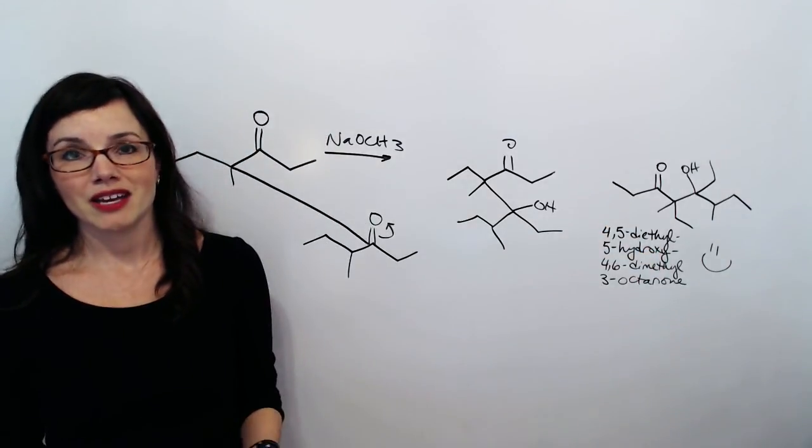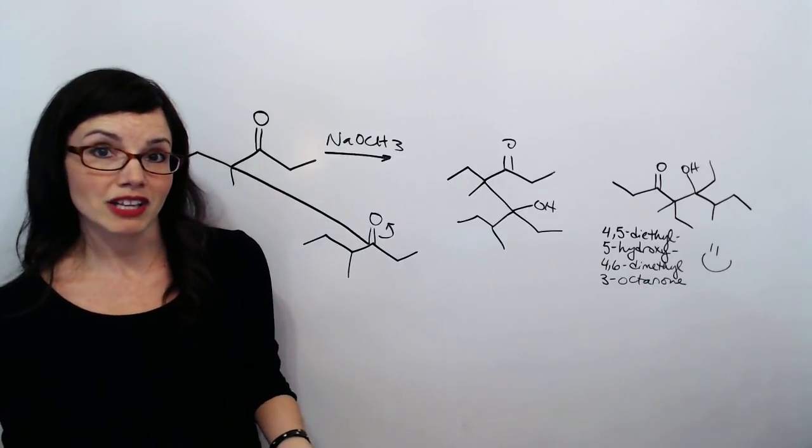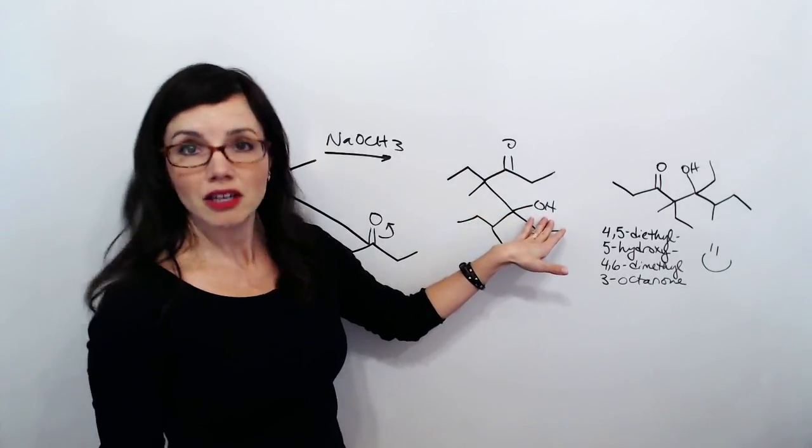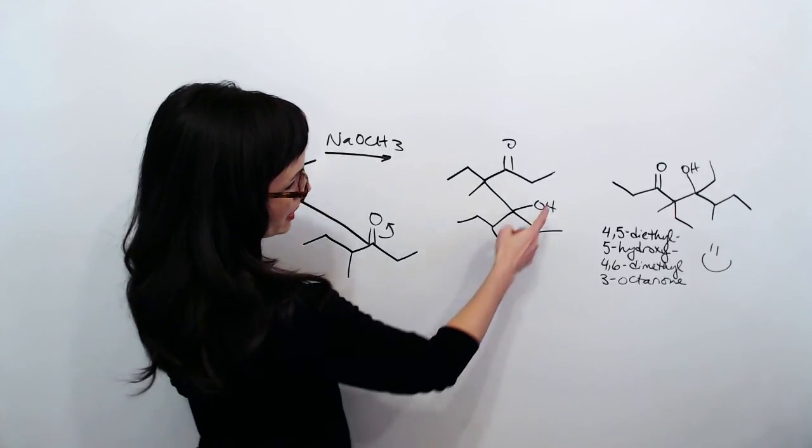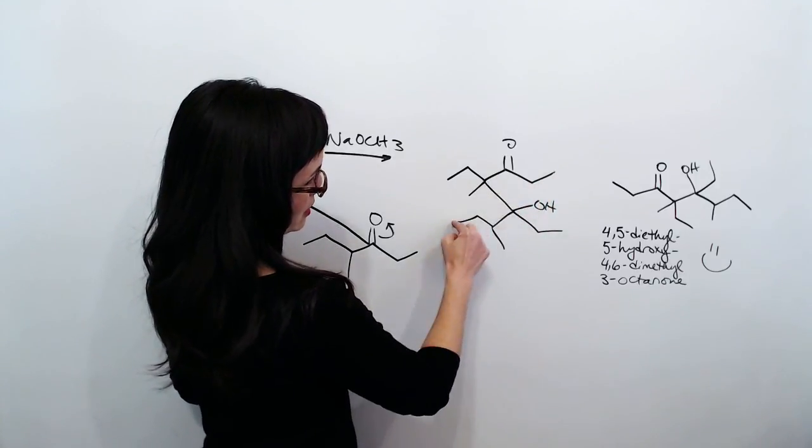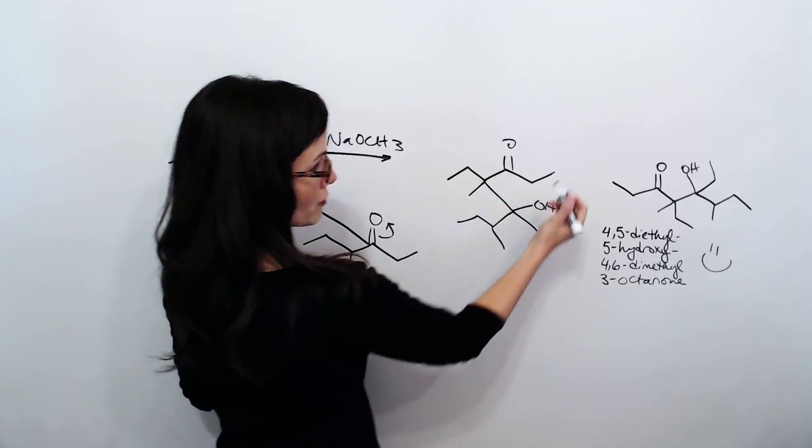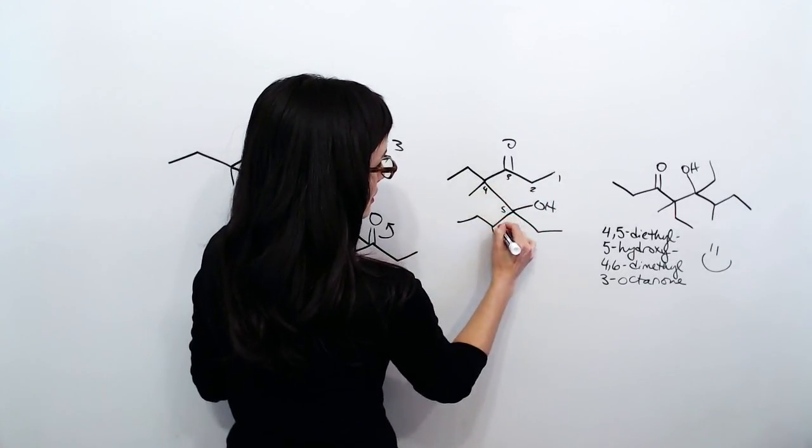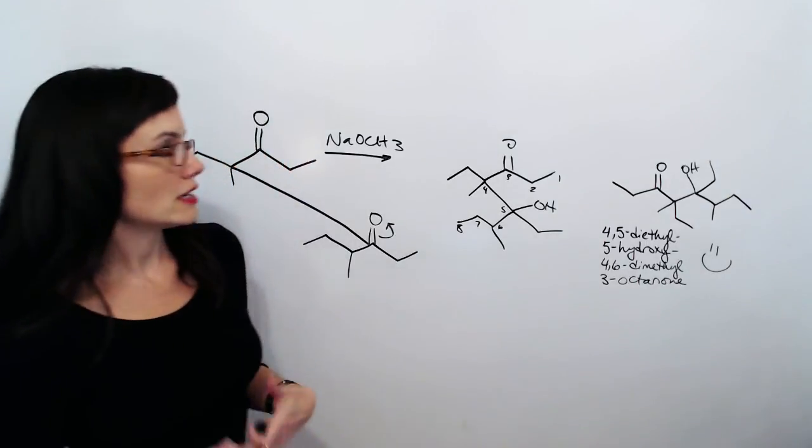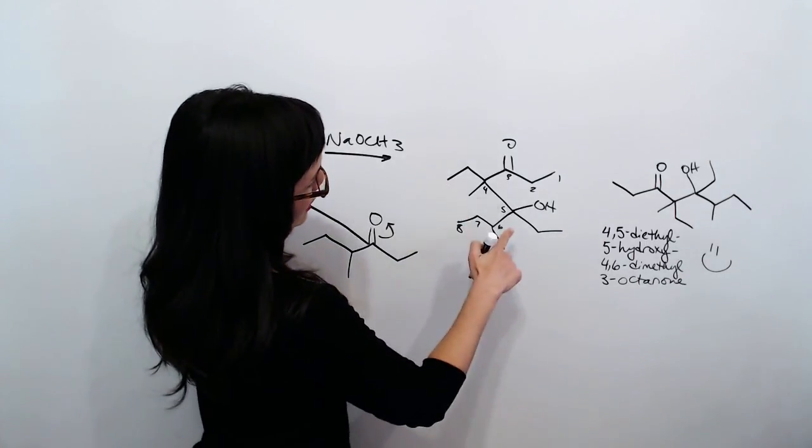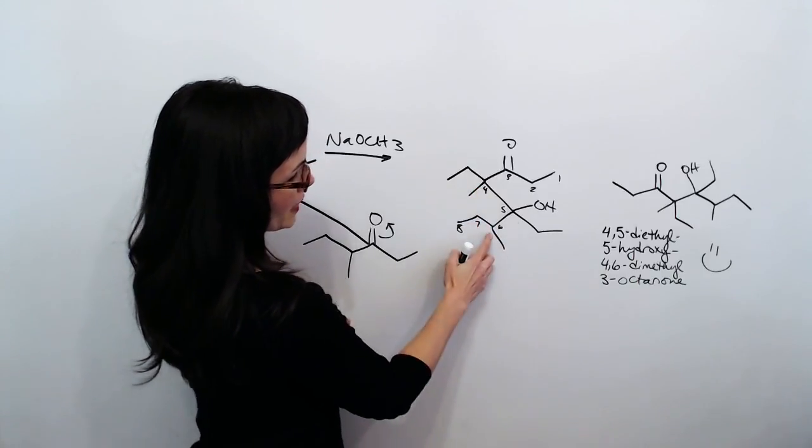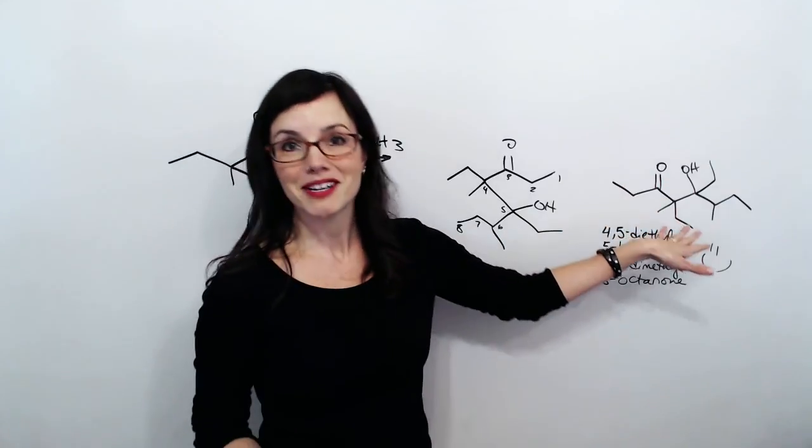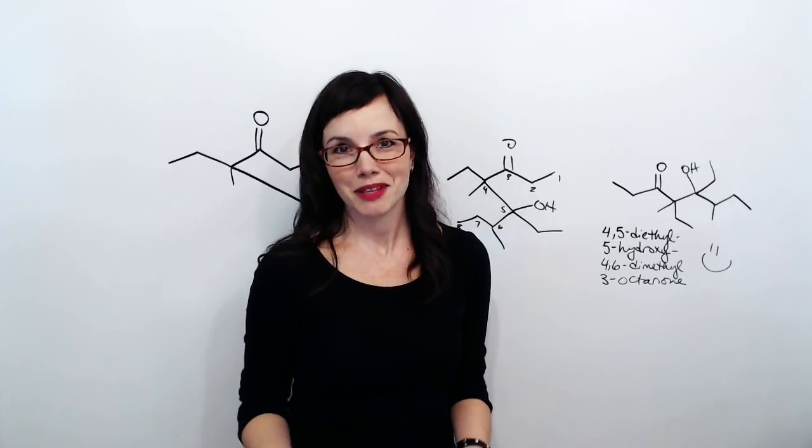For me, the easiest way is to number it as though I would for IUPAC nomenclature. I would find the longest carbon chain that includes the dominant functional groups. Of course, the ketone and also the hydroxy group. So, my longest chain is this one. That's an eight carbon chain. And I would number it from the end that gives the carbonyl the lowest possible number. So, I know it's an octanone. And then I see there is an ethyl and a methyl on the four, an ethyl on the five, a methyl on the six, the hydroxy's on the five.